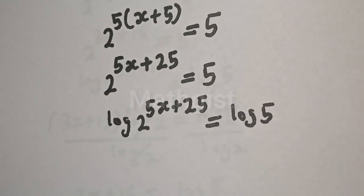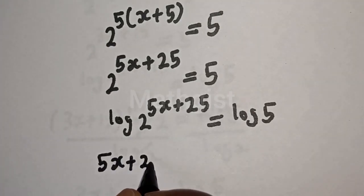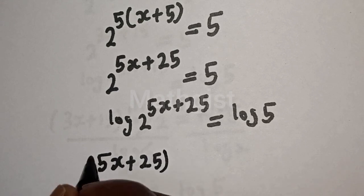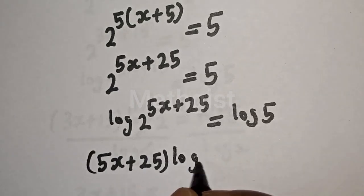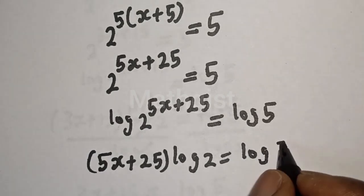Then this is 5s plus 25 log 2 is equal to log 5.